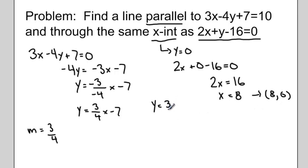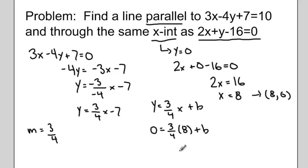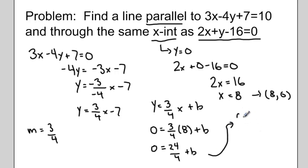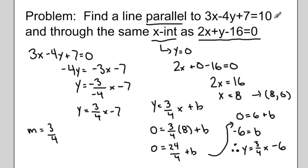Now in y equals mx plus b, I know the slope is 3 quarters and I know the point (8, 0). I sub that point in for x and y, then solve for b. Multiplying 3 quarters by 8, I get 24 over 4 plus b. 24 over 4 reduces to 6. Bringing the 6 to the other side, it becomes negative. So my equation is y equals 3 quarters x minus 6 — a line parallel to the original equation that goes through the same x-intercept as 2x plus y minus 16 equals 0.